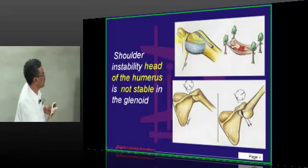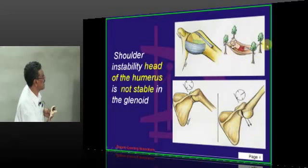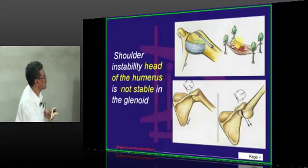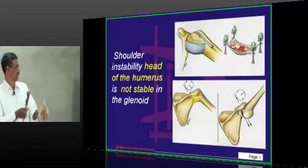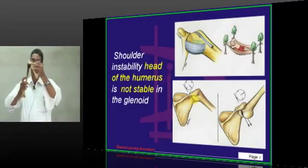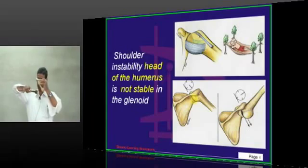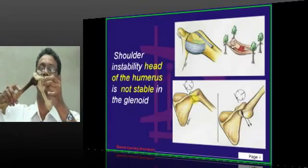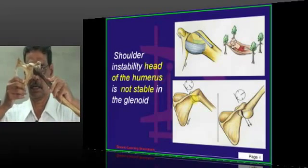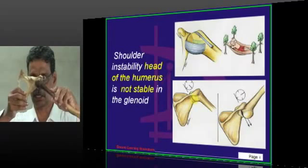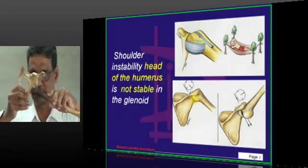The joint is covered by ligaments, but inferiorly only a part of the ligament is present — it is like a sling. This inferior glenohumeral ligament attaches to various bony points and the head lies within it. Whenever there is abduction and external rotation, the head tries to come down. If there is any weakness, it will come down with abduction and external rotation.